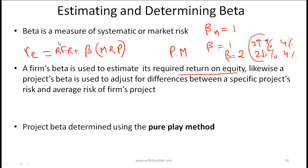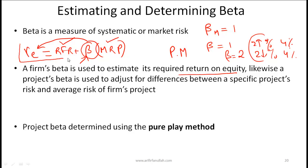The risk-free rate for a given economy is given, and the market risk premium is the expected return of the market minus the risk-free rate — that is also given for a particular economy. So the only variable that is stock-specific is the beta. According to the CAPM model, if we have the beta of a stock, which represents its riskiness, we can find the required rate of return. The higher the beta in a given economy, the higher the required rate of return.